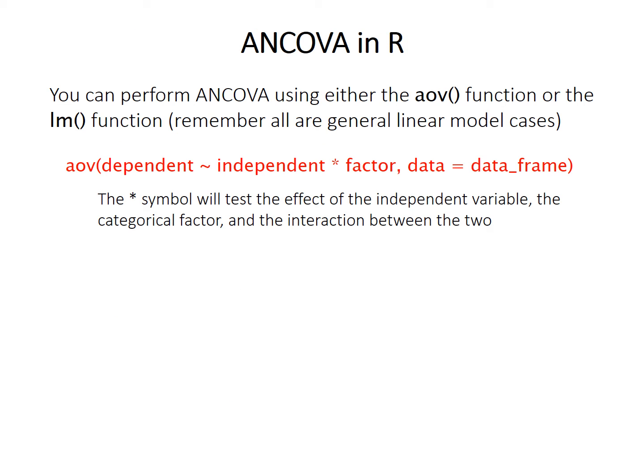Because ANCOVA, ANOVA, and linear regression are all cases of the general linear model, you can perform ANCOVA using either the AOV (ANOVA) function or the LM (linear regression) function in R. The procedure here is illustrated with the AOV function, which requires one less step and is similar to what you've already learned for ANOVA.